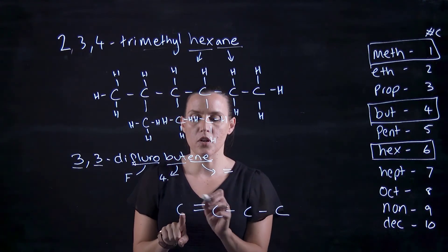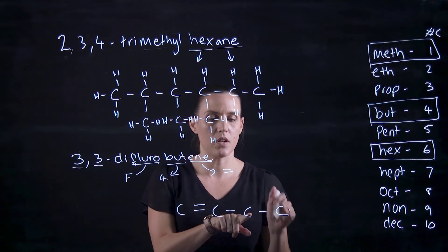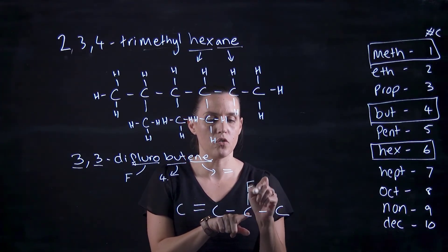So when I put this double bond in, I've labelled this carbon as one. So this is two, and then this one here would be three, and I've got two fluorines.